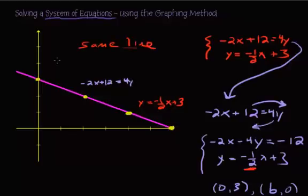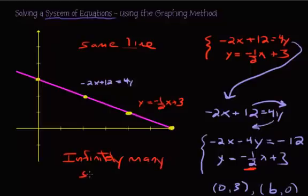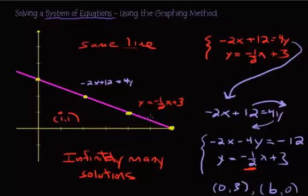Since both equations produce the exact same line, any single point on this line is a solution — which is why we say there are infinitely many solutions. That doesn't mean any pair of numbers is a solution; for example, (1, 1) is not. It means any point on one line is also a solution to the other. That's the end of solving a system of equations using the graphing method. In the next video, we'll cover the addition or substitution method.